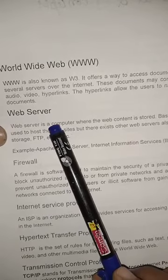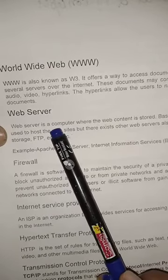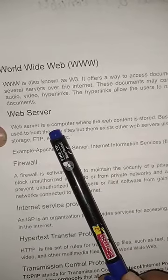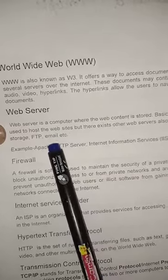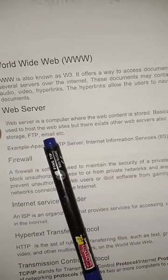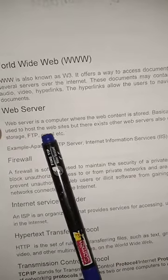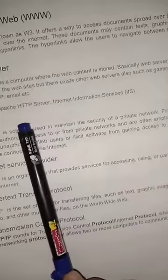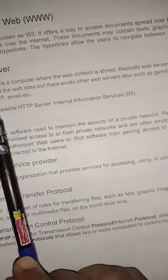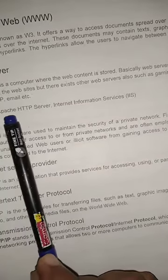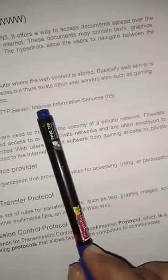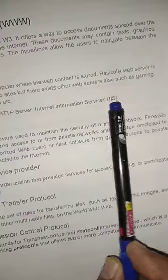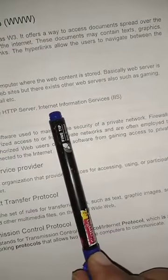Whenever you want to check your mails, you just log in to your system and check them — these mails are actually stored on Google's web server, and they are working 24 hours. Examples of web servers are Apache HTTP Server and Internet Information Services, IIS — these are the two very famous web servers.